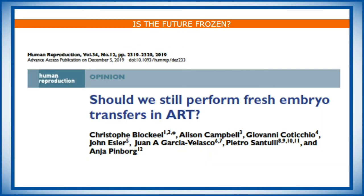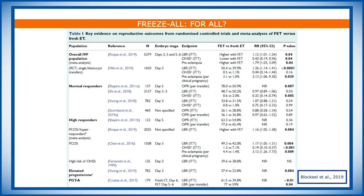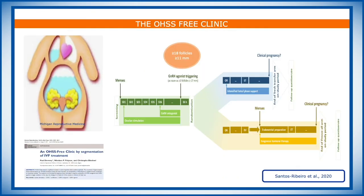This question is really a hot topic today, and a very nice opinion paper has been written by many prominent colleagues. The main table of this opinion paper shows that the answer to whether we should still perform fresh embryo transfer is probably different for different patient populations. Clearly, there are situations in which fresh embryo transfer is better avoided or impractical — for example, in case of elevated progesterone at the moment of ovulation triggering, or when pre-implantation genetic testing is done. It's also important to take into account a normal versus a high response.